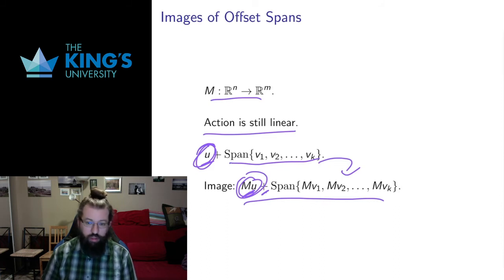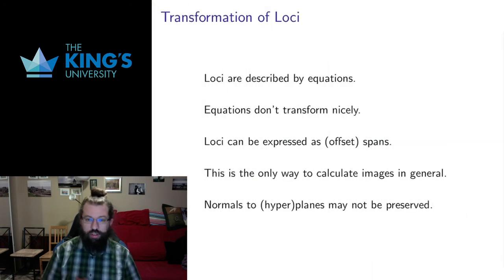The span piece goes to a span piece, the offset goes to an offset, and the addition works before and after the transformation because the transformation is linear. All of this is based on the idea that we're studying in this course, linear transformations, things that work well with addition and scalar multiplication. All right, this works well with spans, this works well with offset spans.